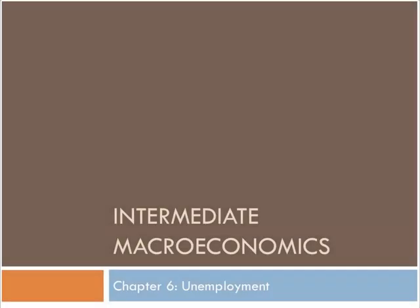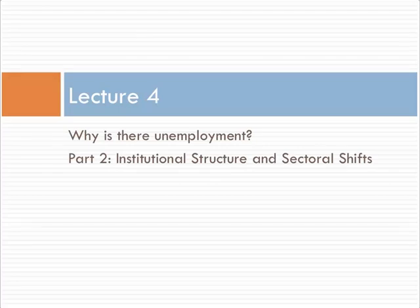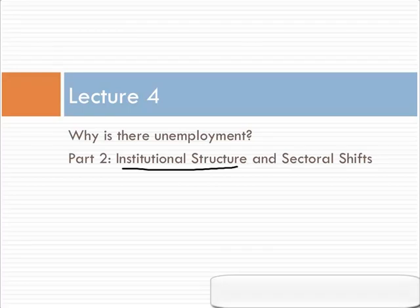Hello everyone, this is our final lecture for chapter 6 on unemployment. In lecture 4, we're going to talk about why there is unemployment, part 2 — specifically about institutional structure and sectoral shifts. We'll go into more detail about what exactly we mean by institutional structure, what we mean by structural shifts, and what some of the policy responses are.